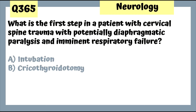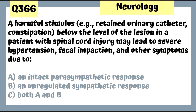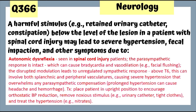Question 365: First step in a patient with cervical spine trauma and potentially diaphragmatic paralysis with respiratory failure — intubation. Cricothyrotomy is only done if intubation fails. Question 366: A harmful substance such as a retained urinary catheter or constipation below the level of lesion in a spinal cord injury patient leads to severe hypertension and other symptoms — there is both an intact parasympathetic response and an unregulated sympathetic response. This is autonomic dysreflexia in spinal cord injury patients.